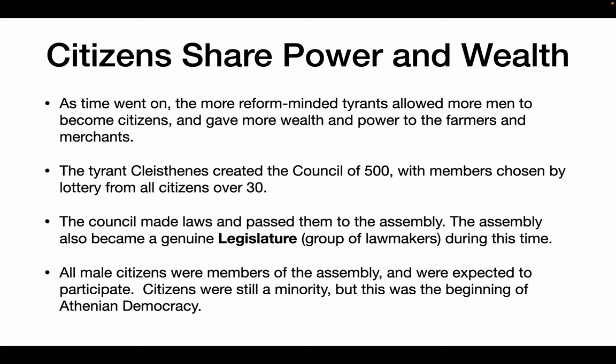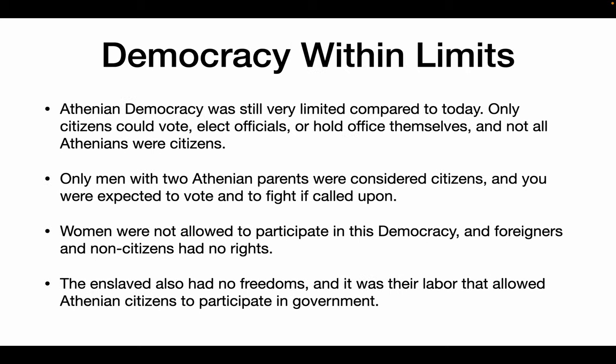However, citizens were still very much the minority at this time. Even as these tyrants expanded the number of people who could vote and participate, they were still the minority. This is the beginning of Athenian democracy. Athenian democracy is still very limited compared to today, where most American citizens have the right to vote. Only citizens could vote — and remember, that's only men. Only citizens could elect officials or hold office. Only men with two Athenian parents were citizens, and you were expected to fight if called upon. Women were not allowed to be part of this democracy, and foreigners and non-citizens also had no rights. Athens, while they freed the debtors, still had enslaved people, and it was their labor that allowed the Athenians to participate in this government.